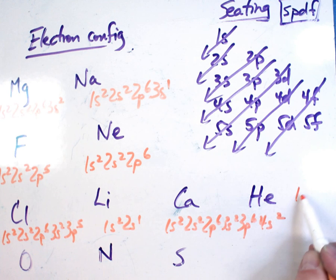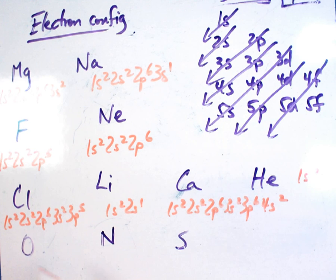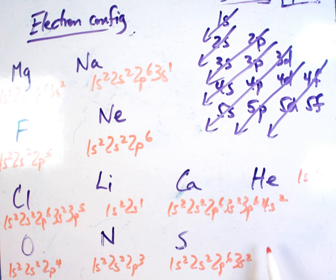Helium, 1s2. Oxygen, 1s2, 2s2, 2p4. Nitrogen, 1s2, 2s2, 2p3. And sulfur, 1s2, 2s2, 2p6, 3s2, 3p4.